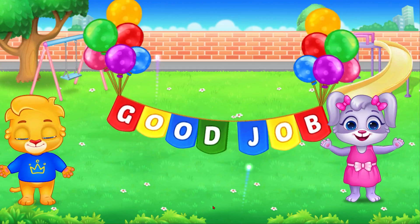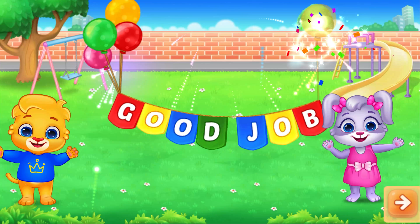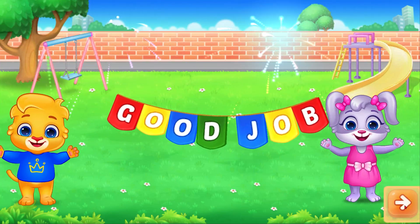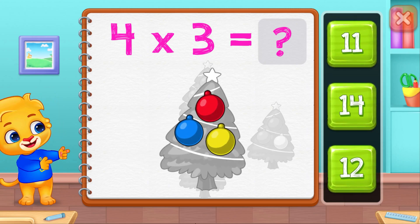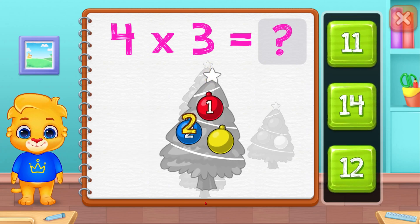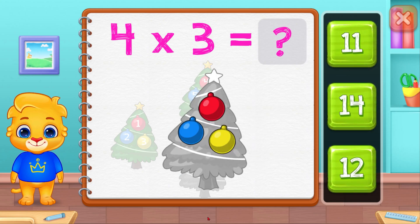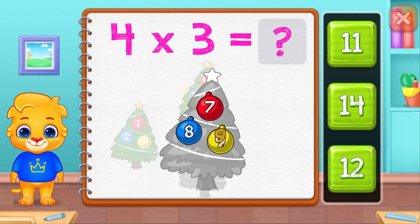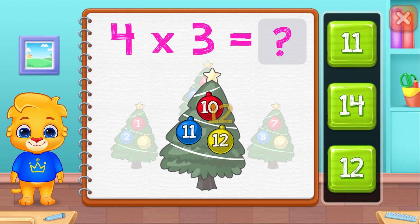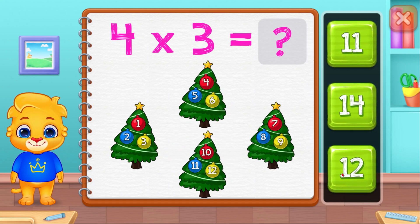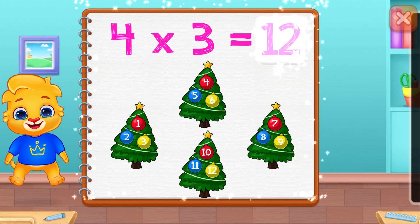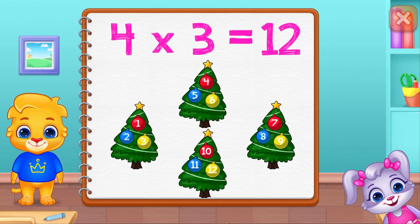Good job! Woohoo! Good job! One! Three! Four! Five! Six! Seven! Eight! Nine! Ten! Eleven! Twelve! Four times three equals twelve!